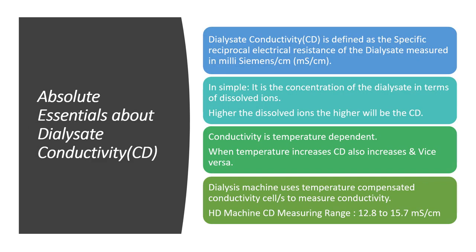Dialysate conductivity, or specific conductance, is defined as the reciprocal electrical resistance of the dialysate, which is measured in millisiemens per centimeter. As per the definition, when electrical resistance increases your conductivity will decrease and vice versa. In simple terms, it is the concentration of the dialysate in terms of dissolved ions.